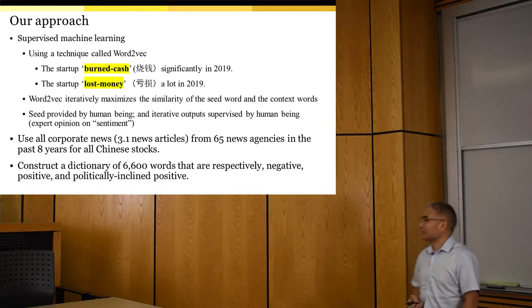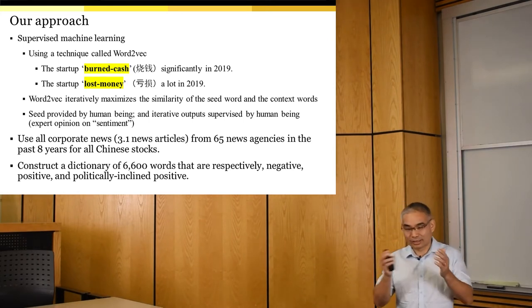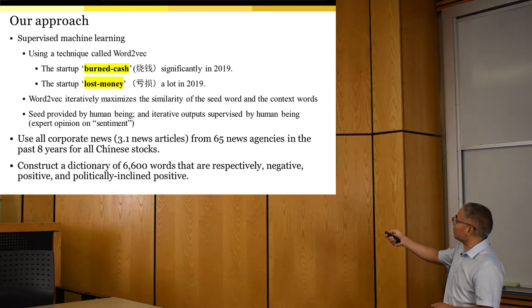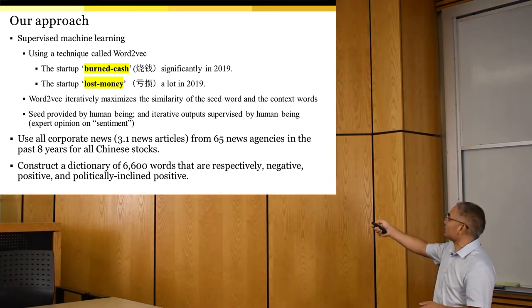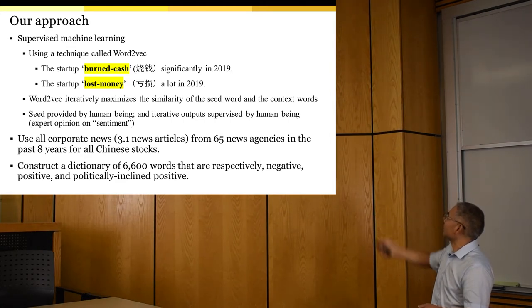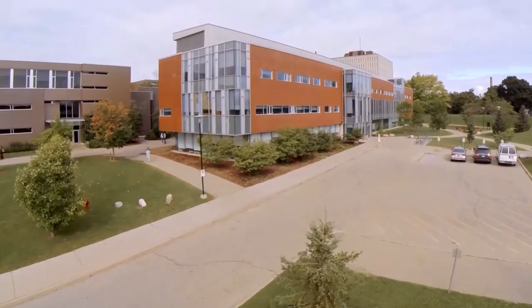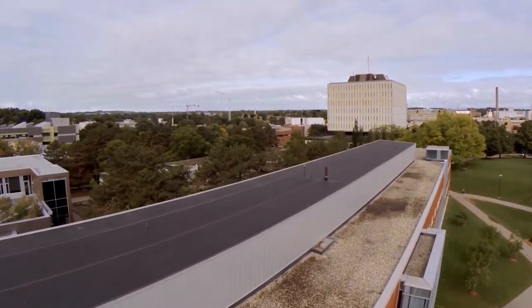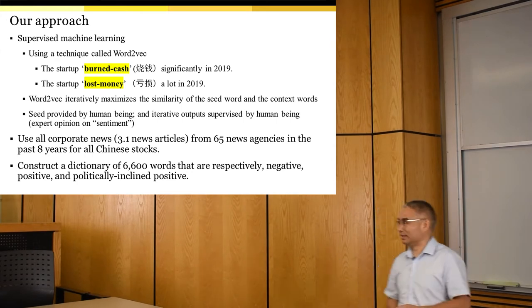In this paper, our approach is to use popular machine learning methods to uncover the list of Chinese financial sentiment words. The particular methodology we use is the so-called Word2Vec, which finds synonyms in sentences. For example, given the sentence 'The startup burned cash significantly in 2019' and 'The startup lost money a lot in 2019,' the computer should identify that 'burn cash' and 'lost money' are two identical expressions, both carrying negative connotations.